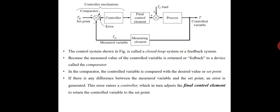The most common final control element in process control industries is the control valve. The control valve manipulates flowing fluid — such as gas, steam, water, or chemical compounds — to compensate for load disturbances and keep the regulated process variable as close as possible to the desired set point.